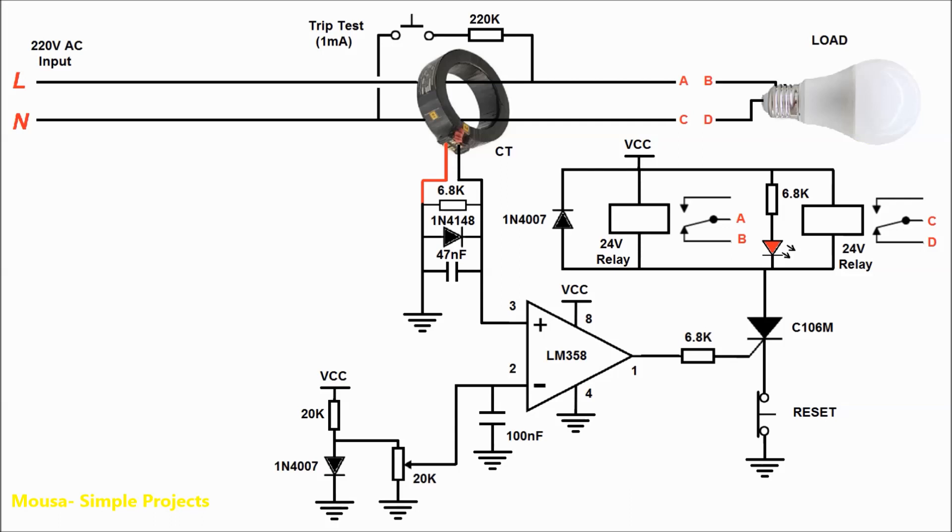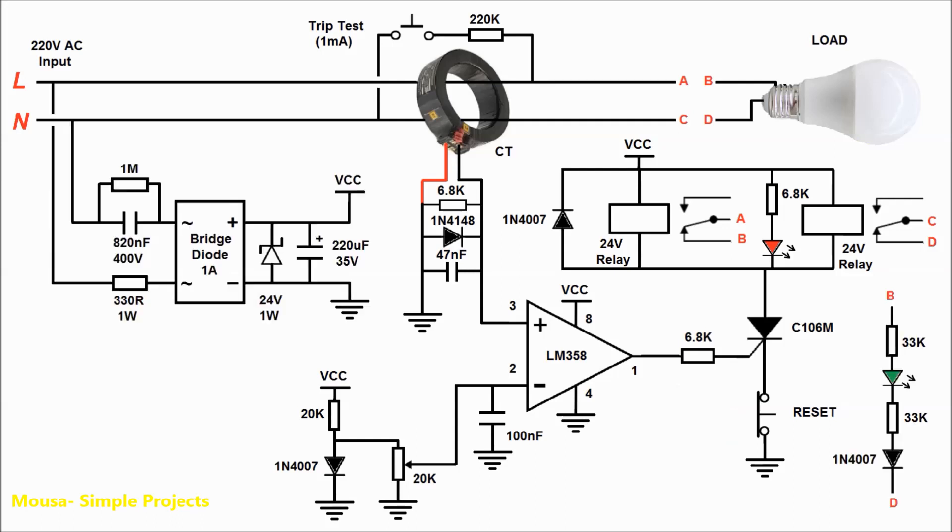And finally, the last part is a power supply that converts 220-volt AC voltage to 24-volt DC voltage. By pushing this test push button, we're making one milliamp unbalanced current to see if the circuit is working well or not. This LED is an indicator to show you that the mains voltage is connected to the load.